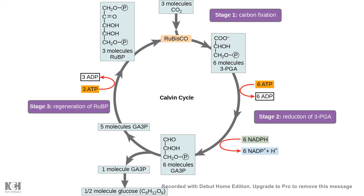Roughly, the Calvin cycle has three phases. Stage one is carbon fixation, where CO2 is fixed with the help of rubisco enzyme and forms 3-phosphoglycerate — that's the first stable compound in the C3 cycle. Stage two is the reduction of 3-phosphoglycerate to glyceraldehyde 3-phosphate, and this glyceraldehyde 3-phosphate molecule is used to regenerate RuBP, or it might be used to form glucose.